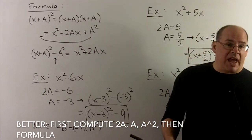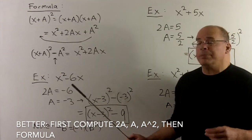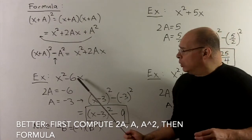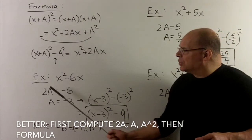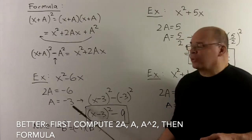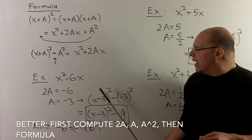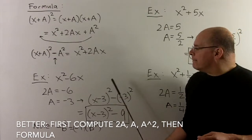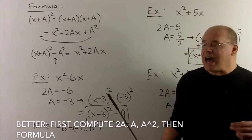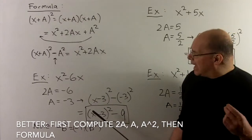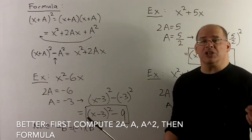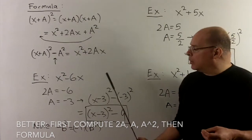Let's look at another example: x squared minus 6x — just changing the sign from the previous example. The coefficient in front of x is minus 6, so 2a equals minus 6. Cut it in half: a equals minus 3. Dropping into the formula gives x minus 3 squared minus quantity minus 3 squared. Minus 3 squared becomes 9, so the answer is x minus 3 squared minus 9. We could expand to check, but we won't do that here.